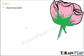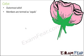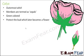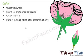Calyx is the outermost whorl and it is made up of the sepals. Each member individually is called a sepal, and the entire whorl of sepals is called the calyx. It is green in color — it doesn't matter what color the petals are, the sepals are mostly green. They protect the bud which later becomes a flower, providing protection when the flower is not yet formed and is still a bud.